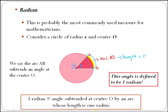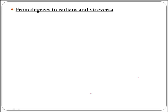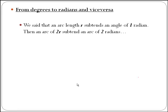The natural question now would be: we know we have two different measures for angles, but how do we change from degrees to radians or from radians to degrees? We will start by thinking a bit. We said that an arc length r subtends an angle of one radian.